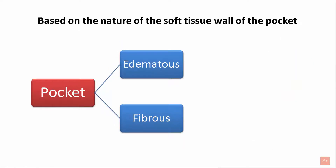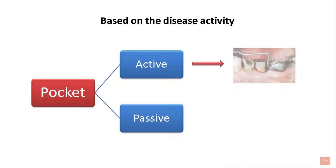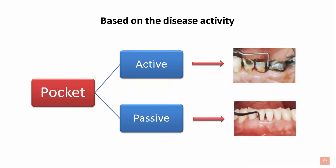Based on the nature of the soft tissue wall of the pocket, they can either be classified as edematous or fibrous. An edematous pocket is associated with inflammatory discharge, whereas a fibrous pocket is associated with a healing response with reduced bleeding on probing. Based on the disease activity, pockets can either be classified as active, involving inflammatory response and exudation, or passive pockets, which are more fibrous in nature.